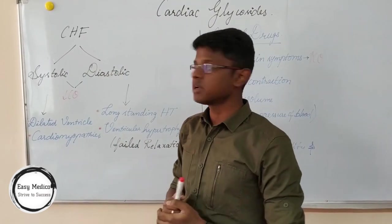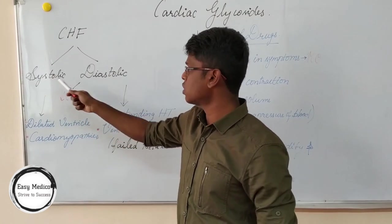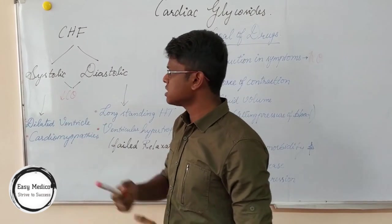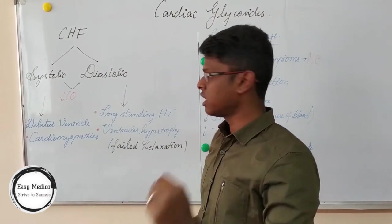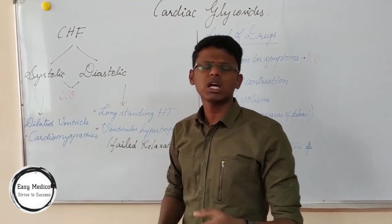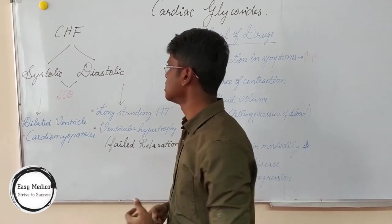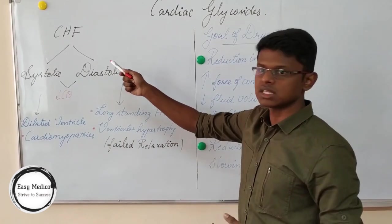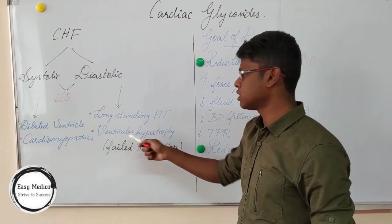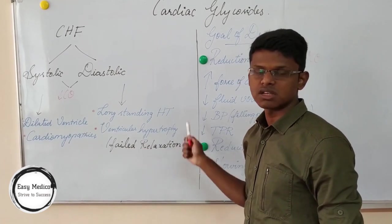Congestive heart failure can be classified into two types: systolic and diastolic. Both ultimately cause a decrease in cardiac output. The reasons for systolic congestive heart failure are dilation of ventricles and cardiomyopathies — which are deformities in the architecture of the heart or heart muscles. The reasons for diastolic congestive heart failure are long-standing hypertension and ventricular hypertrophy, which ultimately leads to relaxation failure.